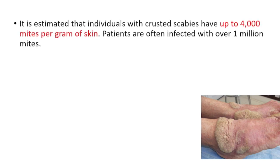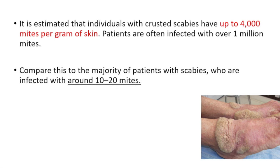It's estimated that individuals with crusted scabies have up to 4,000 mites per gram of skin, and patients are often infected with over 1 million mites. When we compare this with normal scabies, patients are infected with around 10 to 20 mites.